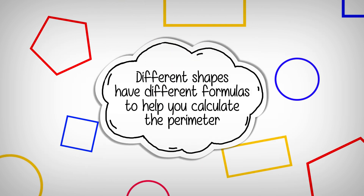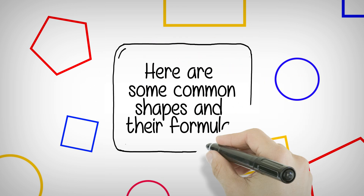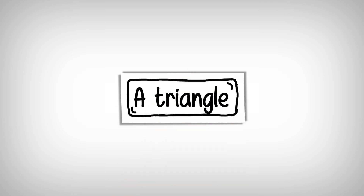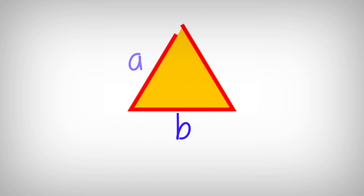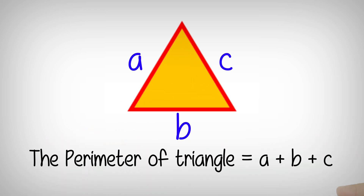Different shapes have different formulas to help you calculate the perimeter. Here are some common shapes and their formulas. A triangle is very simple — to calculate the perimeter, it's simply a plus b plus c.